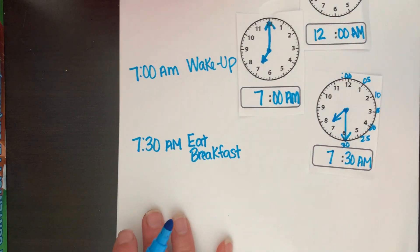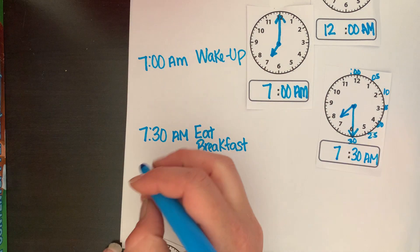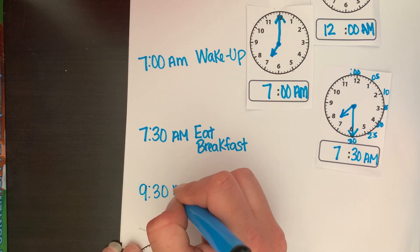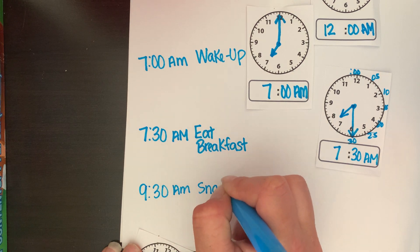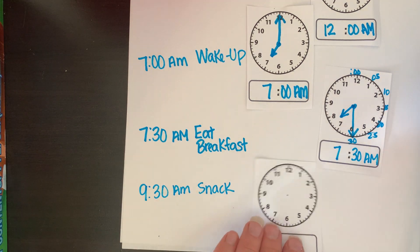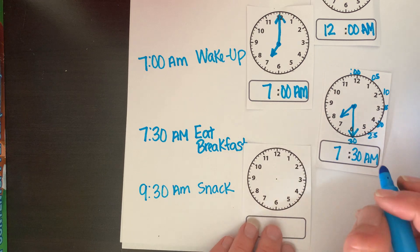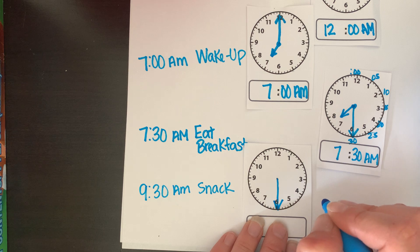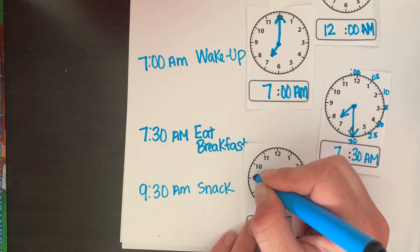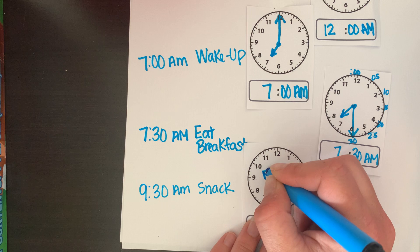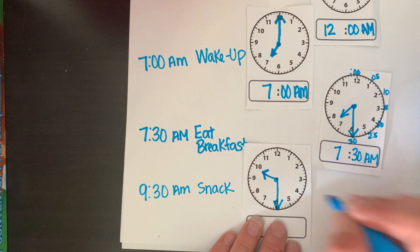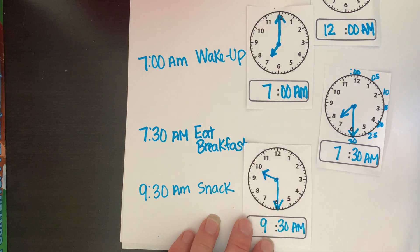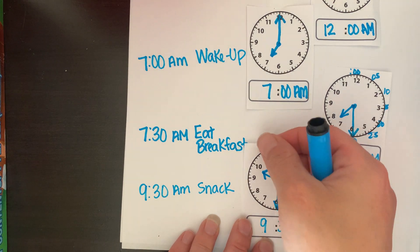Let's do two more. How about — what am I doing at 9:30 a.m.? At 9:30 a.m. I'm usually having a snack. 9:30 is going to be similar to 7:30 — my minute hand is going to be on the 30 minutes, and my hour hand is going to be halfway between the 9 and the 10. So at 9:30 a.m., I'm usually having a snack.